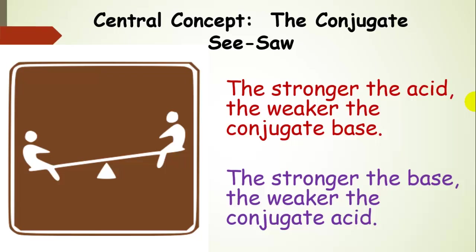That brings us to our central concept: the conjugate seesaw. Essentially, the stronger the acid, the weaker the conjugate base. So the stronger the acid, the higher the Ka value, and the lower the Kb value — meaning the weaker the conjugate base. The same applies to bases: the stronger the weak base, the higher the Kb value, and the lower the Ka value, so the conjugate acid is weaker. That is the conjugate seesaw — as one goes up, the other has to go down.